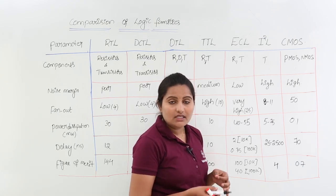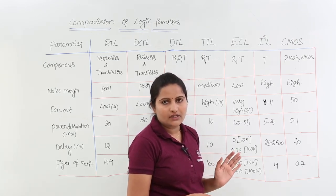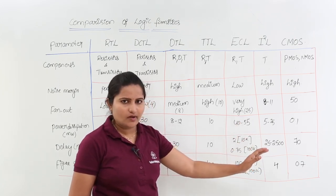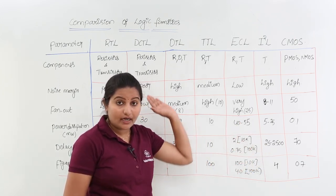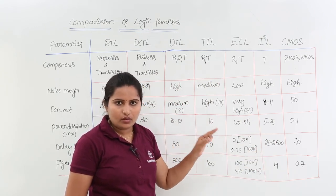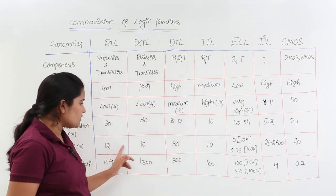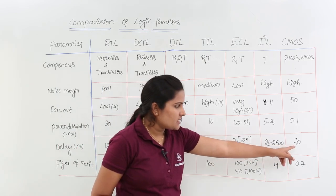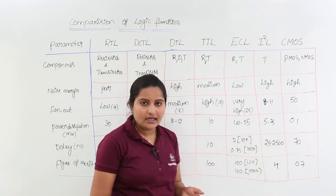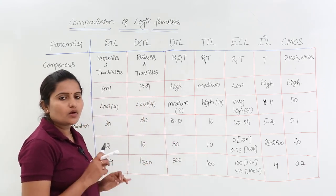Since CMOS has high propagation delay, it is slow compared to all other logic families. ECL is the fastest among all logic families. CMOS has high delay, meaning its speed is very low. Now coming to figure of merit, which is also called the speed-power product.